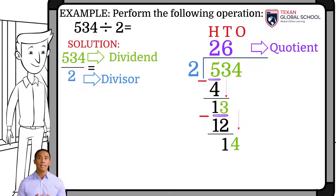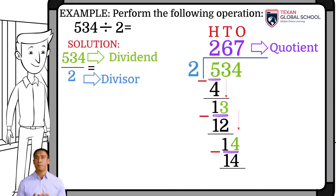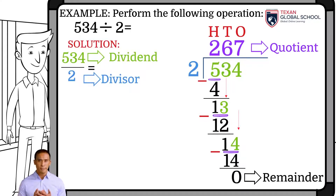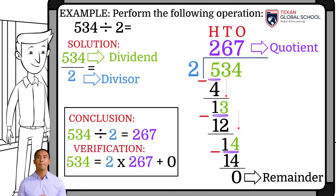Since the first digit 1 of the dividend is less than the divisor 2, select the next digit as well. We can see that the divisor 2 is contained 7 times in the dividend 14, which is placed in the quotient above the galley in the 1's column. So, multiply this 7 of the quotient by the divisor 2, and place the result 14 below the dividend. Now, subtract 14 from 14, and the 0 remainder is placed in the same column as the 1's. We conclude that 534 divided by 2 equals 267. To verify the problem, use Euclid's Lemma. Hence, 534 is equal to the product of divisor 2 with the quotient 267, plus 0 remainder.